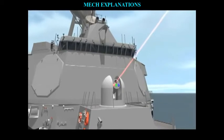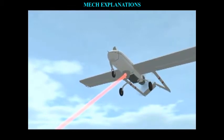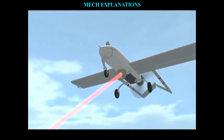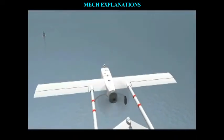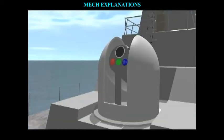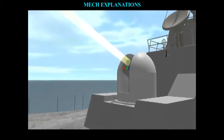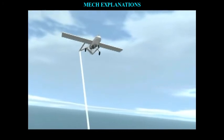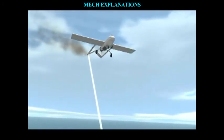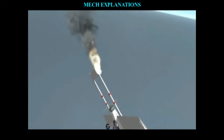Laser diodes form a subset of the larger classification of semiconductor PN junction diodes. Forward electrical bias across the laser diode causes the two species of charge carrier — holes and electrons — to be injected from opposite sides of the PN junction into the depletion region. Holes are injected from the P-doped, and electrons from the N-doped, semiconductor. A depletion region, devoid of any charge carriers, forms as a result of the difference in electrical potential between N- and P-type semiconductors wherever they are in physical contact. Due to the use of charge injection in powering most diode lasers, this class of lasers is sometimes termed injection lasers, or injection laser diode.